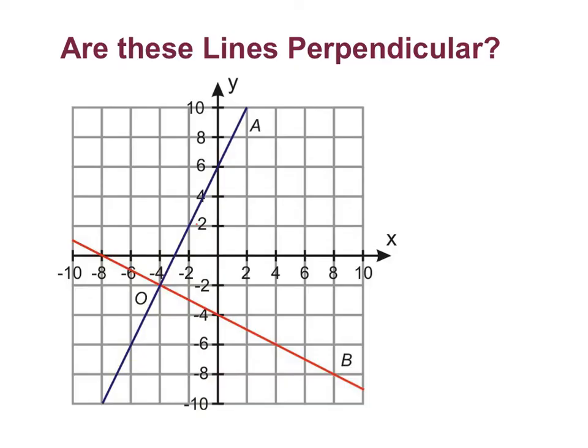All right, are these lines perpendicular? So perpendicular, as you recall, occurs when two lines intersect and they form right angles, or 90-degree angles. Now for the slopes of perpendicular lines, they need to be opposite reciprocals.